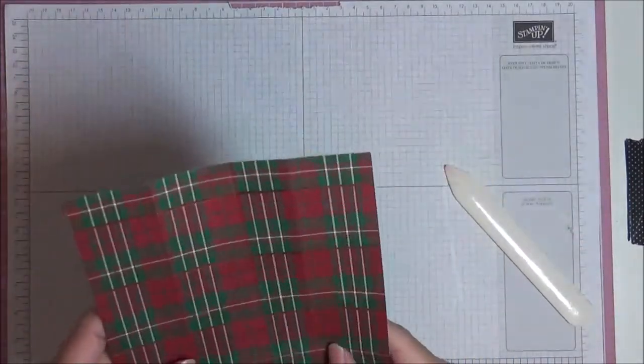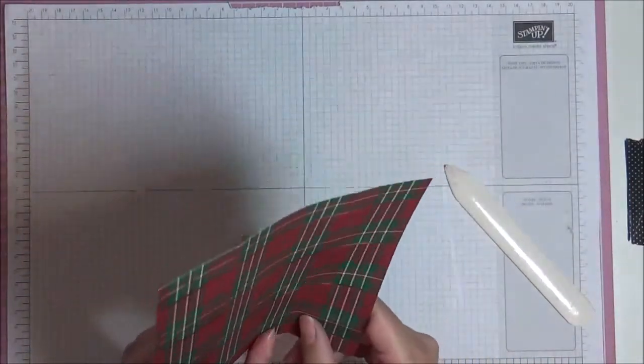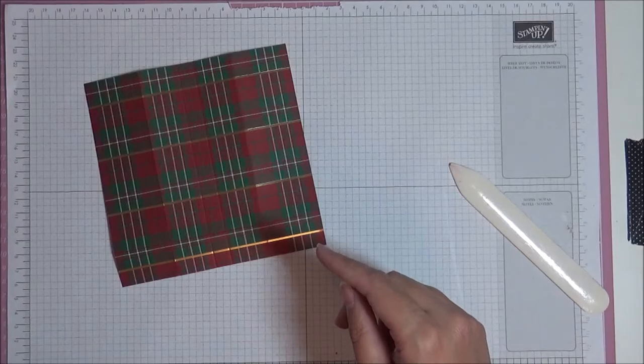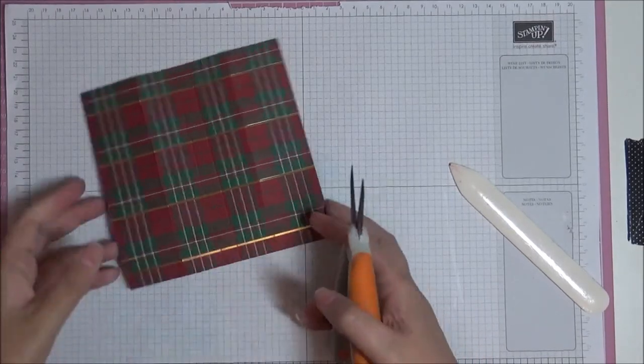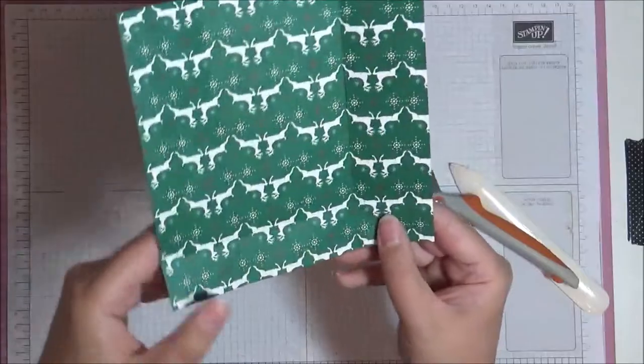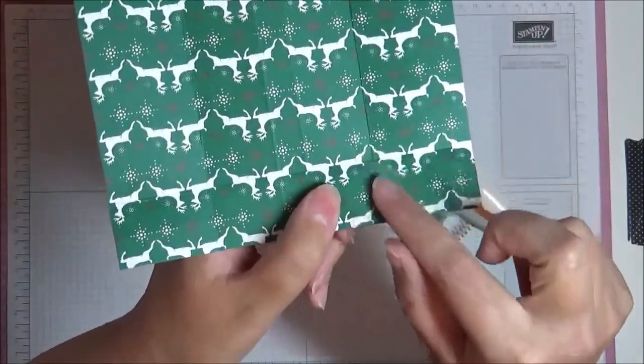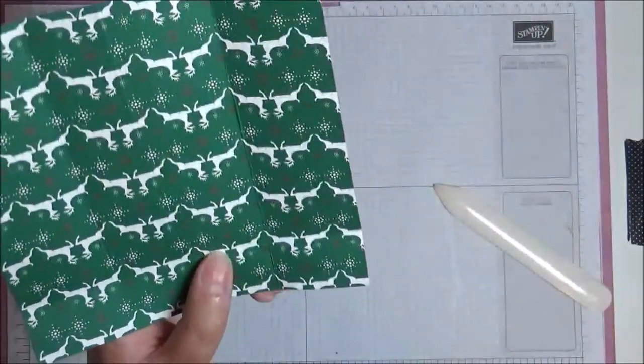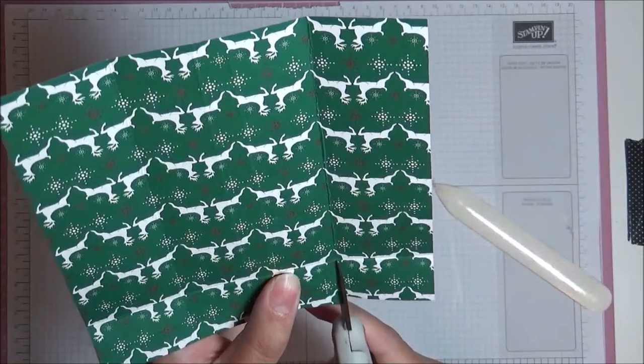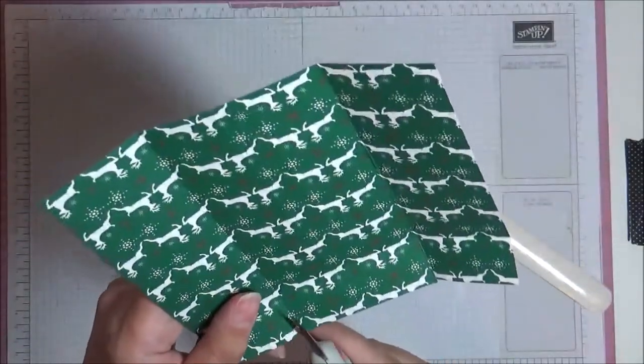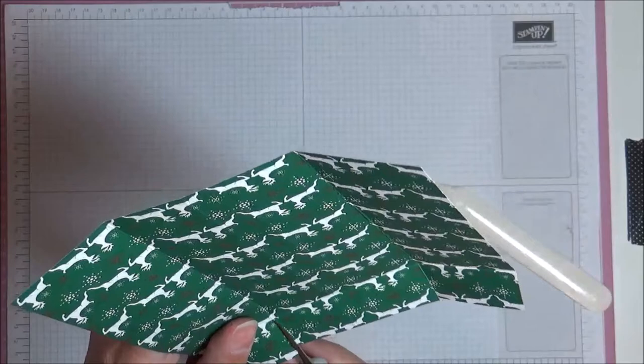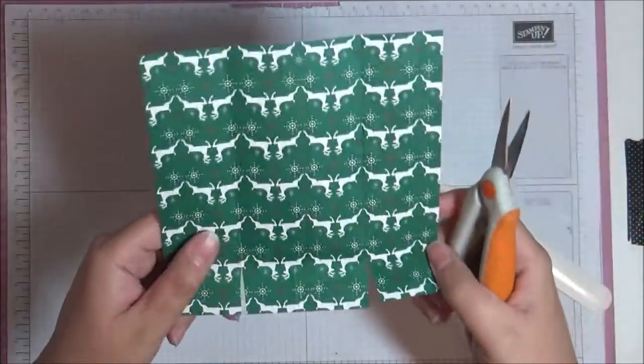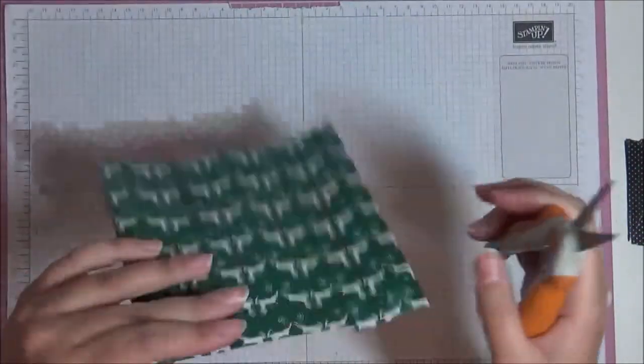Find our base and fold again. Okay, so now on our base, we are going to separate the tabs at the bottom. You're going to cut up on the 1 inch side so you cut up to that score line there. You're going to do that on both sides.